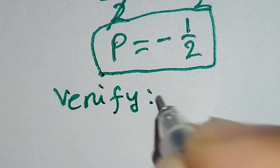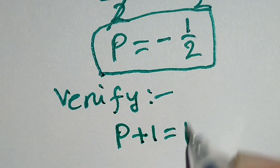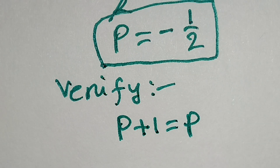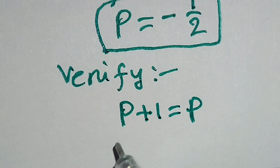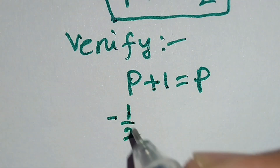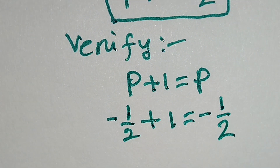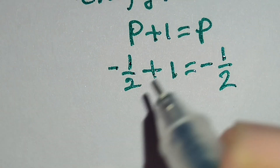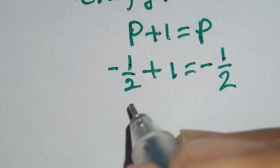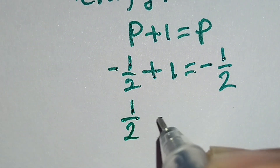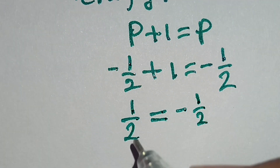Let's verify. The main equation is p plus 1 is equal to p. Now we will put the value of p. Here p is equal to minus 1 over 2, so we can write minus 1 over 2 plus 1 is equal to minus 1 over 2. Here, minus 1 over 2 plus 1 is equal to minus 1 over 2 plus 1 over 2.